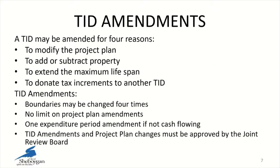There are a number of ways that you can amend districts. Four reasons to amend a district would be to modify the project plan, to add or subtract property within the TID, to extend the maximum life, or to donate tax increments to other districts. TIF amendment boundaries may be changed up to four times, there's no limit on project plan amendments, and one expenditure period amendment if it's not cash flowing. Both TID amendments and project plan changes need to be approved by the Joint Review Board.